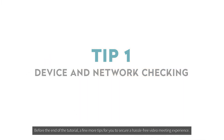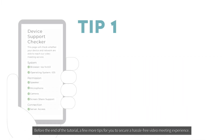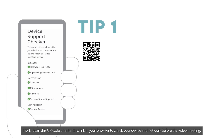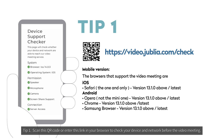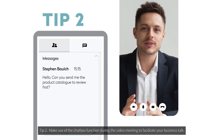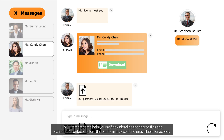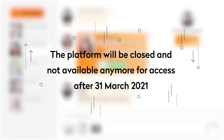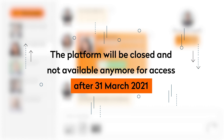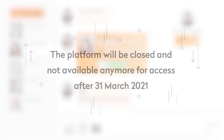Before the end of the tutorial, a few more tips for a hassle-free video meeting experience. Tip number one: scan the QR code or enter the link in your browser to check your device and network before the video meeting, to make sure everything is ready and you won't be bothered by technical problems. Tip number two: make use of the chatbot function during the meeting to facilitate your business talk. Tip number three: remember to download the shared files and exhibitor contacts before the platform is closed, as it will no longer be available for access after the end of the show.